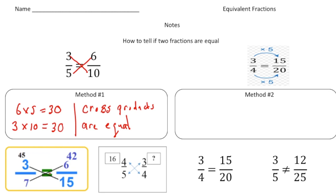Let's look at two problems. Here we have three sevenths and six fifteenths. When I multiply three times 15, I get 45. And six times seven is 42. Because these two numbers are different, these fractions are not the same. Same thing here: four fifths and three fourths. Four times four is 16, and three times five is 15. Because 16 does not equal 15, we know that four fifths does not equal three fourths.